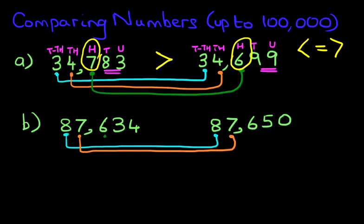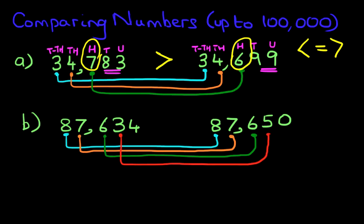They're the same, so we keep going. The hundreds — we've got six hundreds here, and we've got six hundreds on the right, so they are the same. We still haven't worked out which is larger and which is smaller. How about the tens? We've got three tens here and five tens here. We have worked out which digit is going to tell us which is larger and which is smaller — it's the tens. Three is smaller than five. Therefore, the number on the left is smaller than the number on the right, and that was because of the tens.